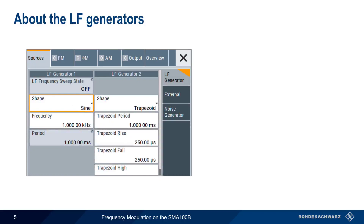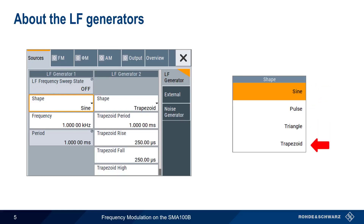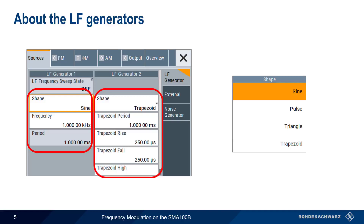The SMA contains two internal LF, or low-frequency generators. You can think of these as simple function generators that are built into the instrument, and which can be used as modulation sources. Each LF generator supports four different shapes: sine, pulse, triangle, and trapezoid. The configuration parameters will be different depending on which shape is chosen.